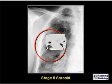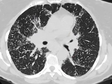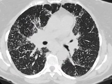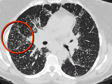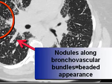Here is a CT scan of a patient with stage 2 sarcoid. There is bilateral hilar adenopathy, innumerable small nodules, and beading along the bronchovascular bundle caused by the multiple small nodules.